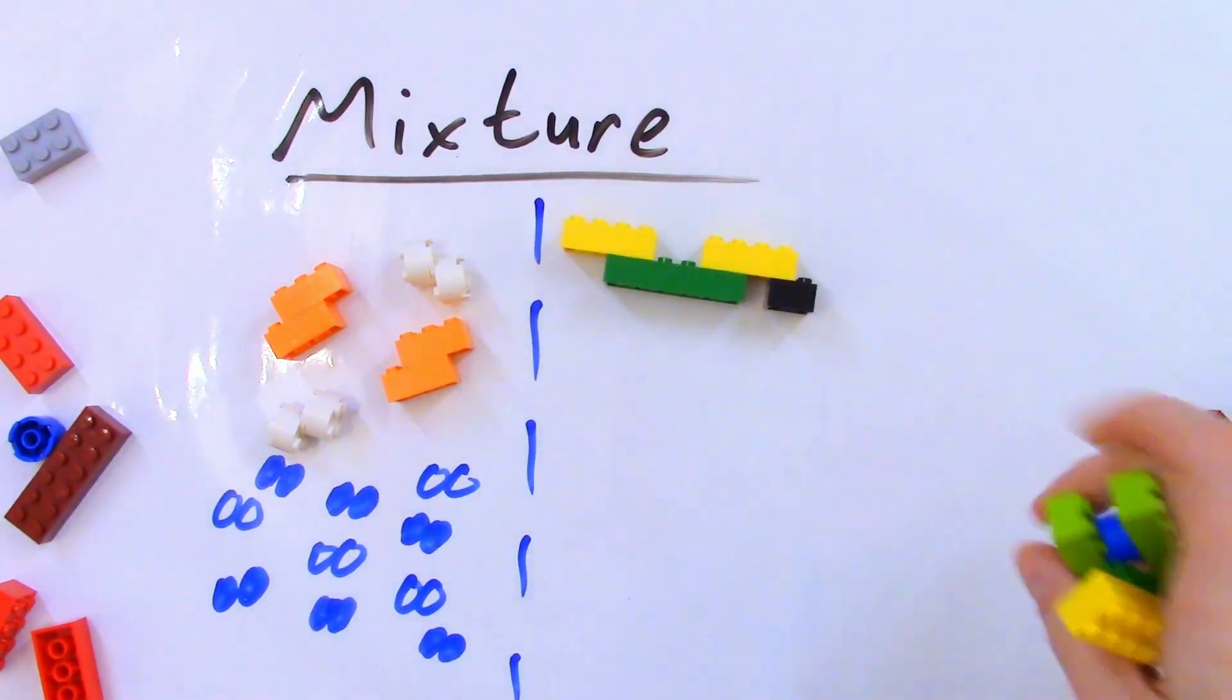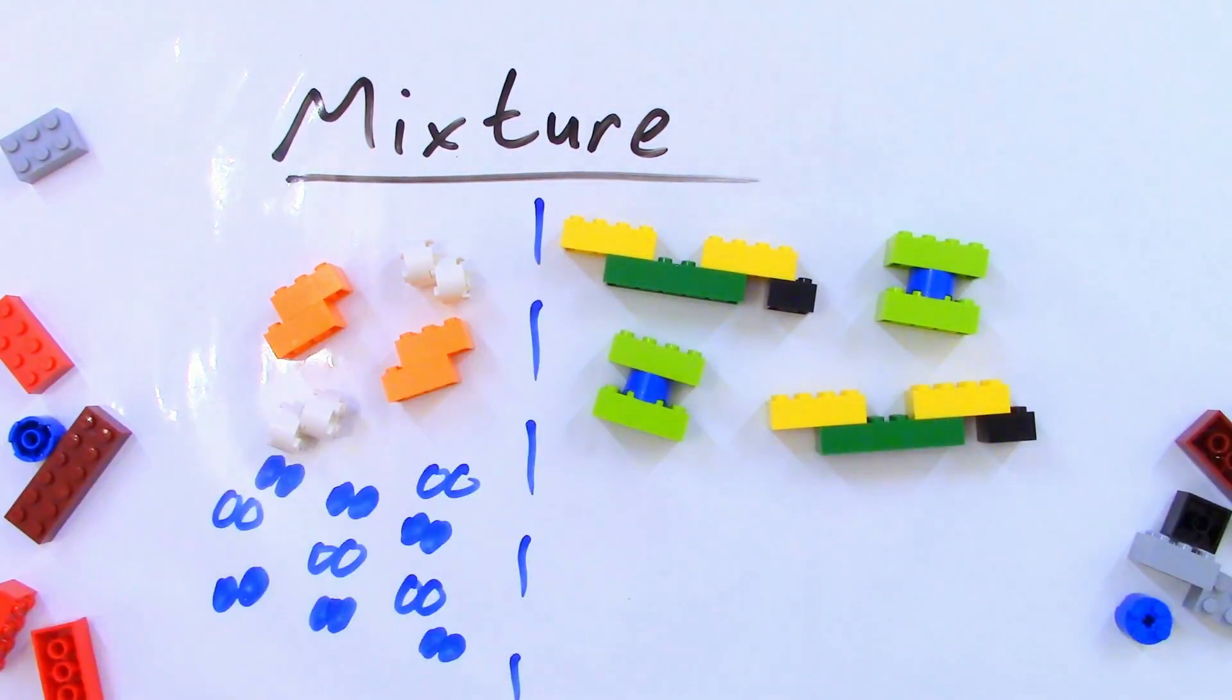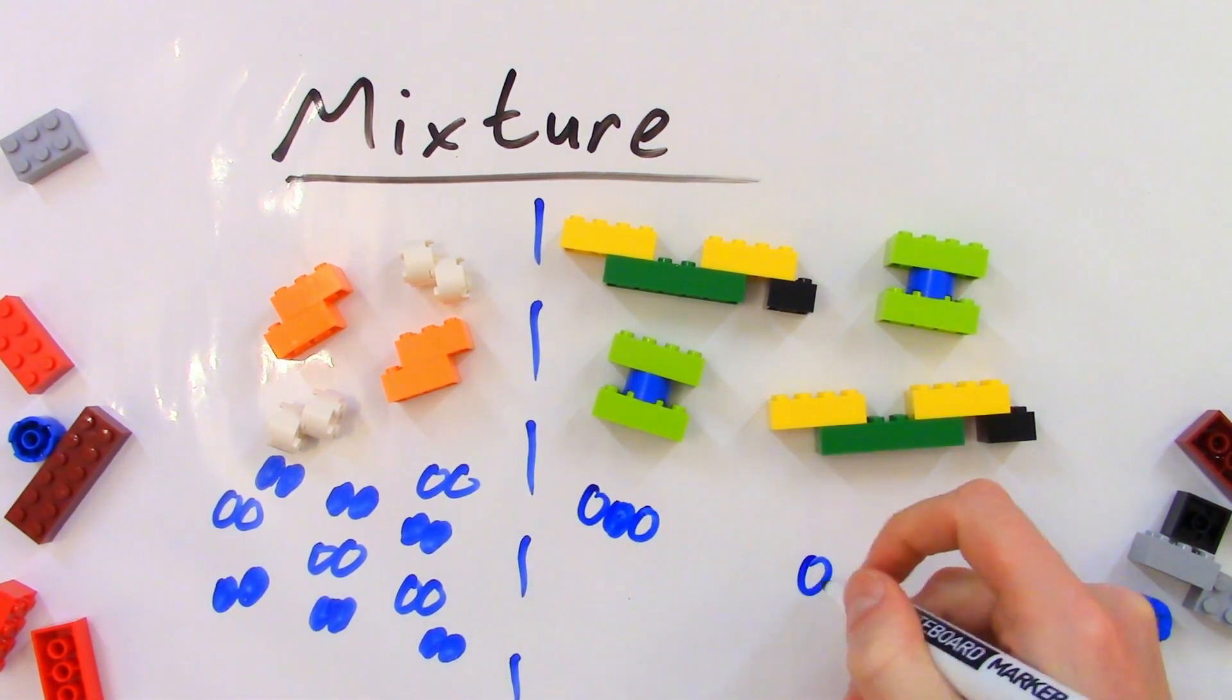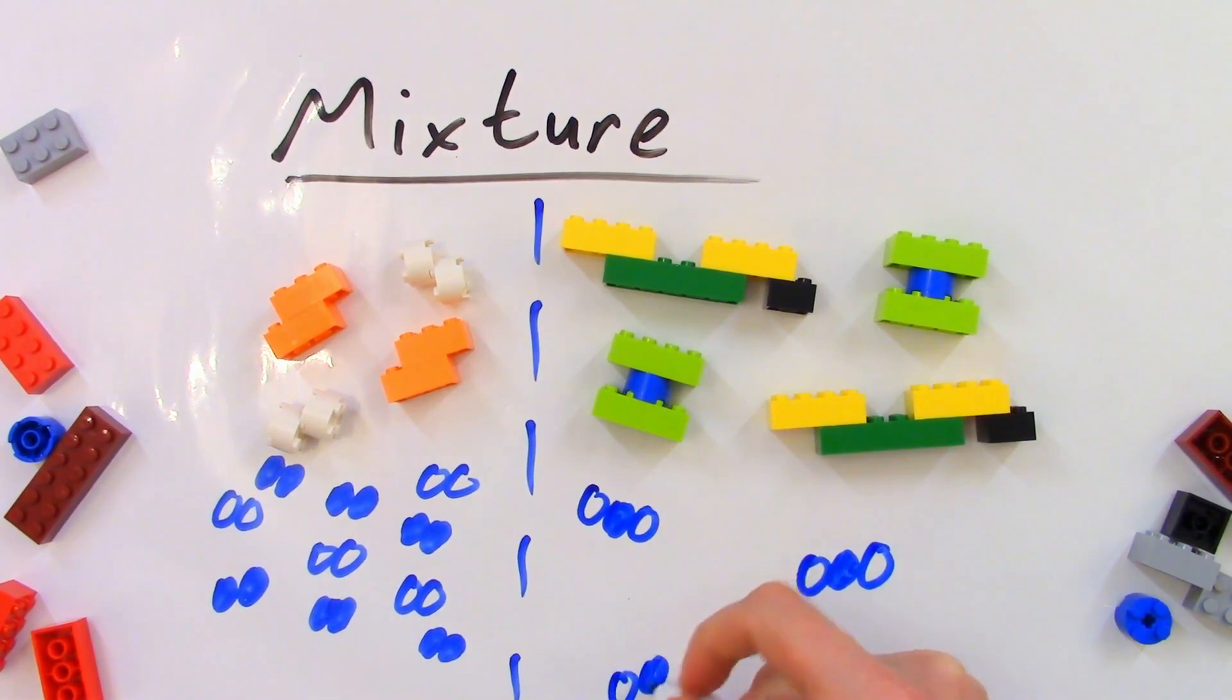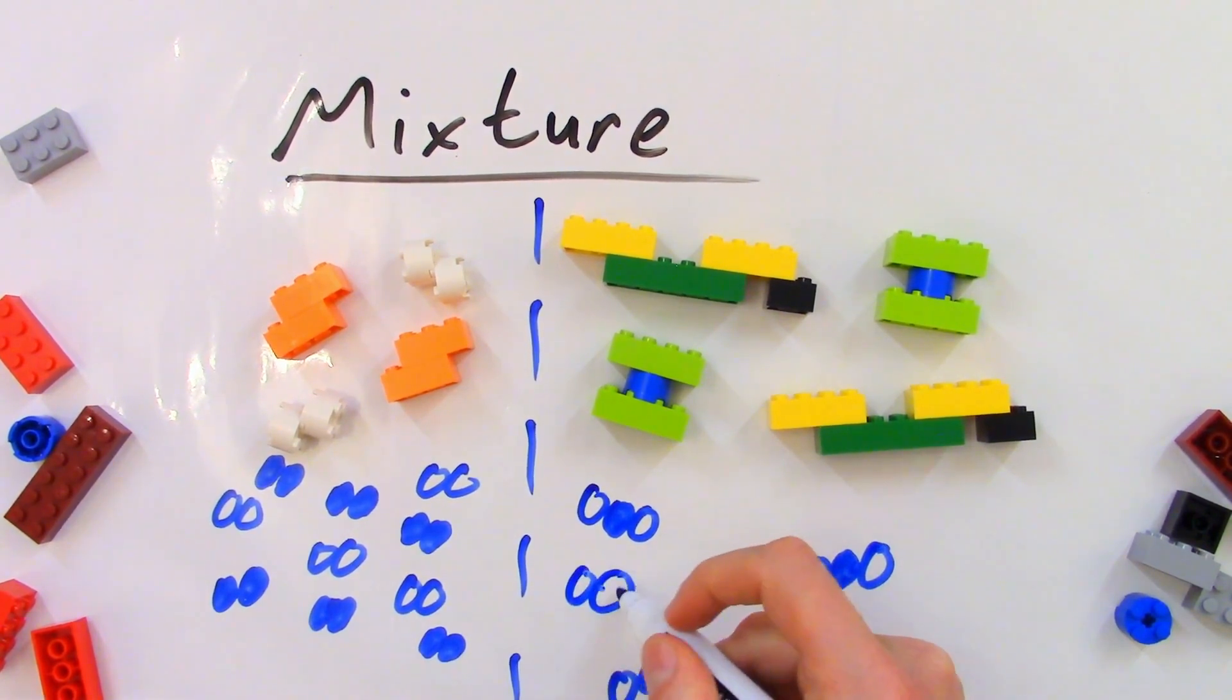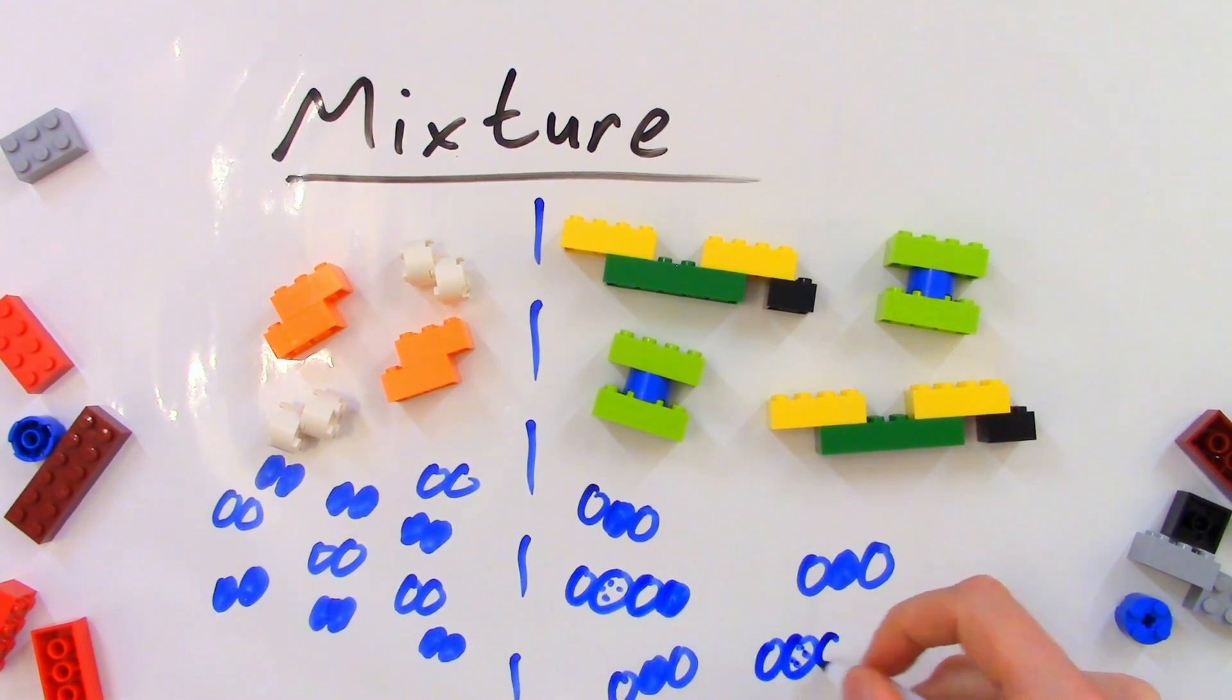We could also have a mixture of compounds, which might look something like this. Again, notice that these are compounds because they are made of two or more different types of atom. As with the previous example, the compounds are not bonded to one another, so we know this is a mixture. We might draw this mixture something like this. If we took sugar, which is a compound, and dissolved it in water, which is also a compound, we'd get a mixture of the two compounds. The water could be evaporated off to easily separate the compounds again.